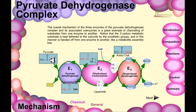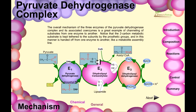Pyruvate is taken in, producing carbon dioxide as the first byproduct. Then it produces a complex of the acetyl group with TPP, which reduces the lipoamide and transfers the acetyl group to the reduced form of lipoamide to generate that structure. Then coenzyme A comes in, and transfer of the acetyl group from lipoamide to coenzyme A generates acetyl-CoA.